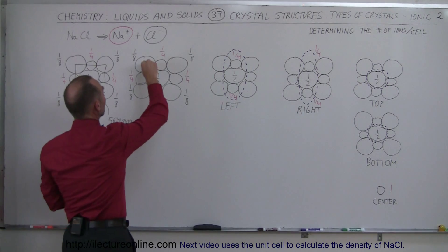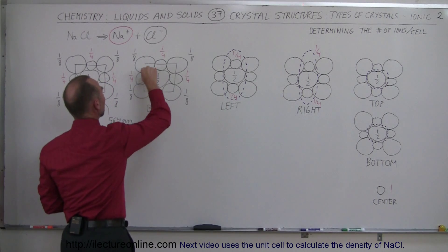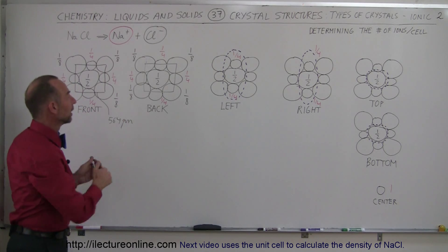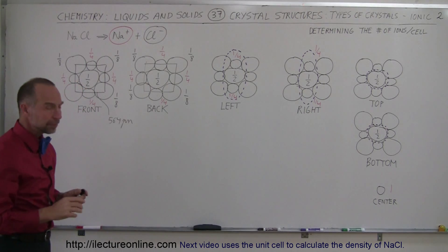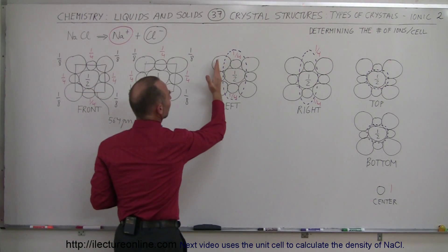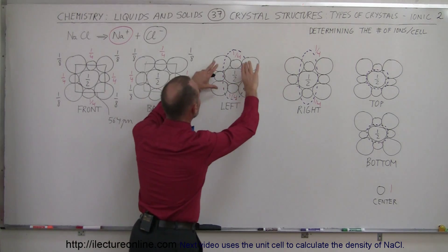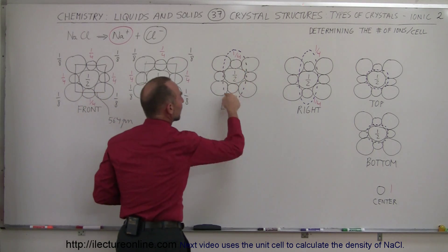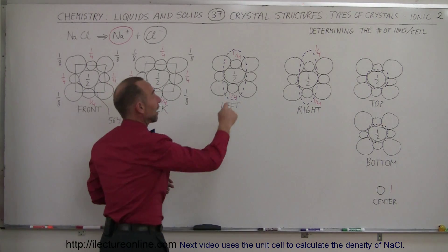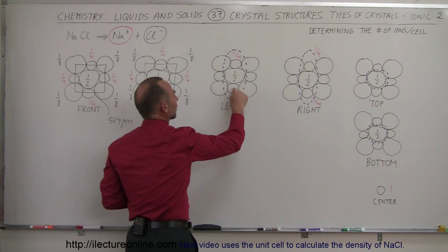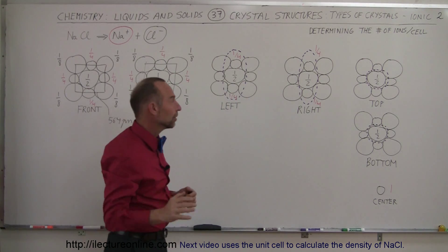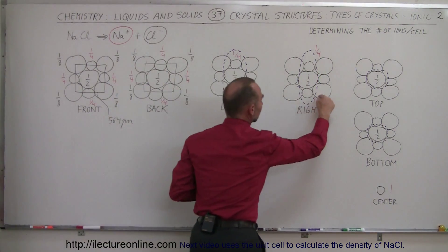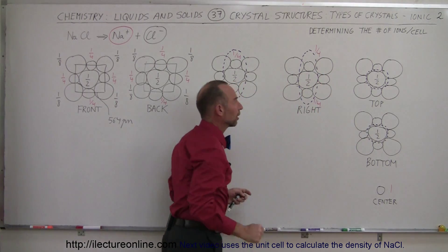We do exactly the same on the back side — again one half from the face ion and one-eighth from each corner ion. Looking from the left, the three ions on the far left and far right are already accounted for by looking at the front and the back, so we only count the three in the middle. There we have one in the face — half a chlorine ion. We do the same on the right side, again counting only the three in the middle for another half chlorine ion.